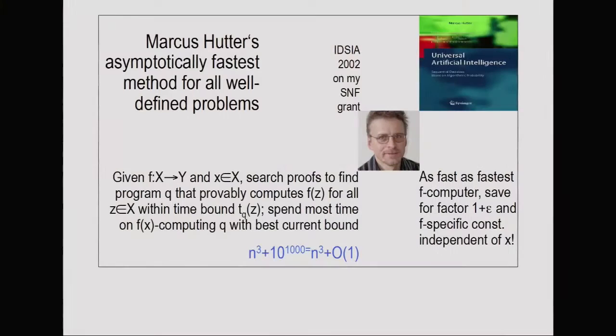If you want every detail, it's about one page — study Markus's original paper from 2002, when he was in my lab. You should at least know there is something like an asymptotically optimal fastest way of solving all kinds of computational problems. Some people say the problems in this universe, on this planet, are so small that the constant overhead for the proof search still plays a big role in most practical applications — and these people are right. That's the only reason we're still in business with deep learning: because our problems are so small.